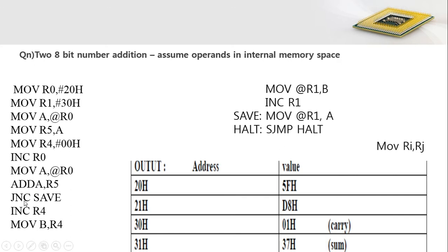After this addition, check for carry. If no carry is generated after the addition, then jump to the label named 'save' and directly store the resultant value of addition available in the accumulator. The result is loaded into the memory location whose address is available in R1 register. R1 is pointing to byte address 30h, so at location 30h the result of addition is stored.